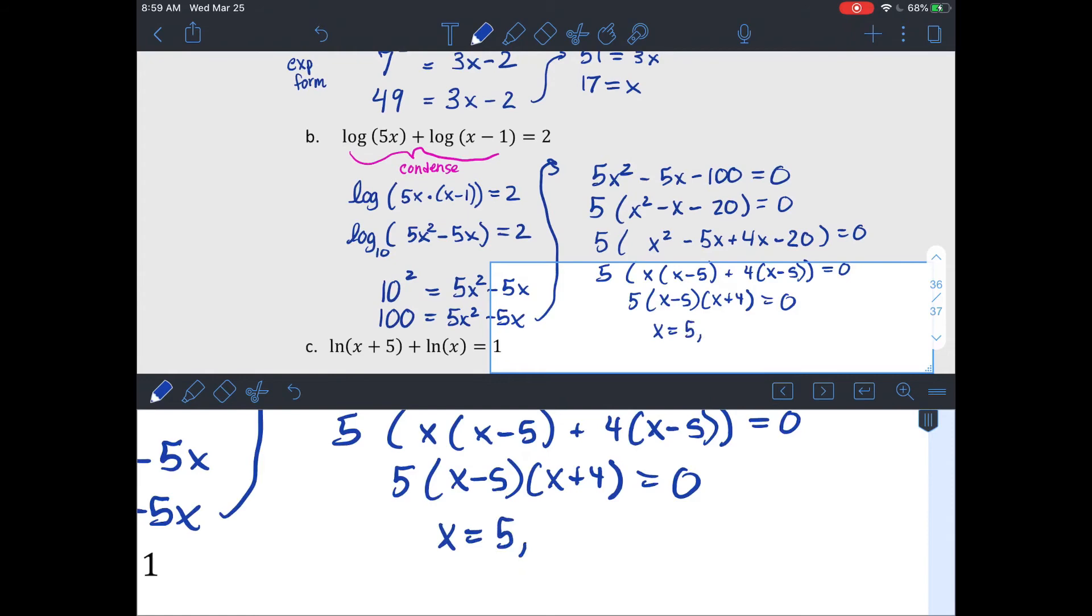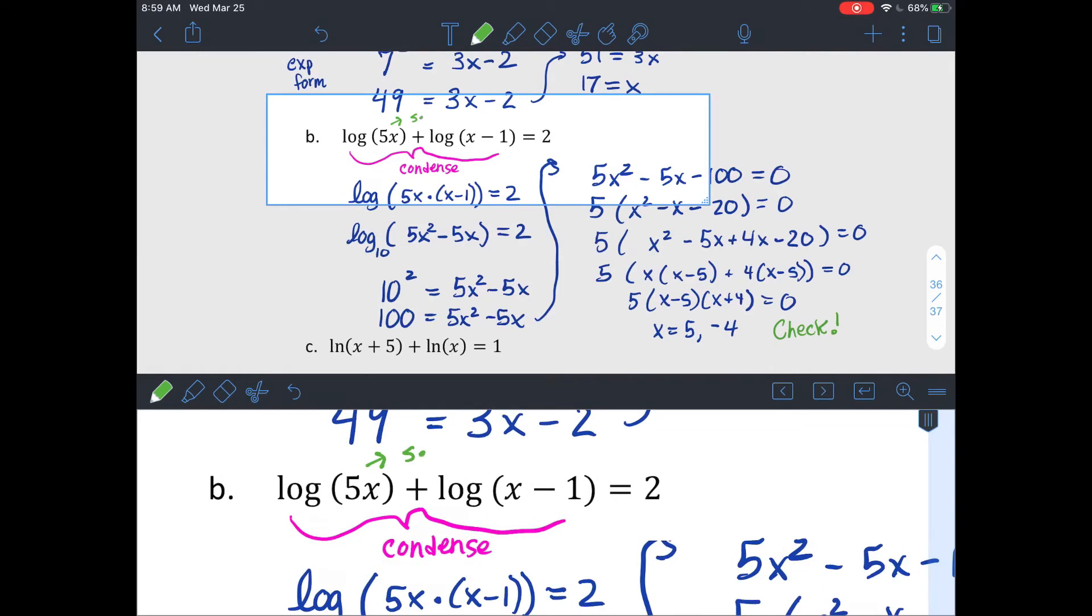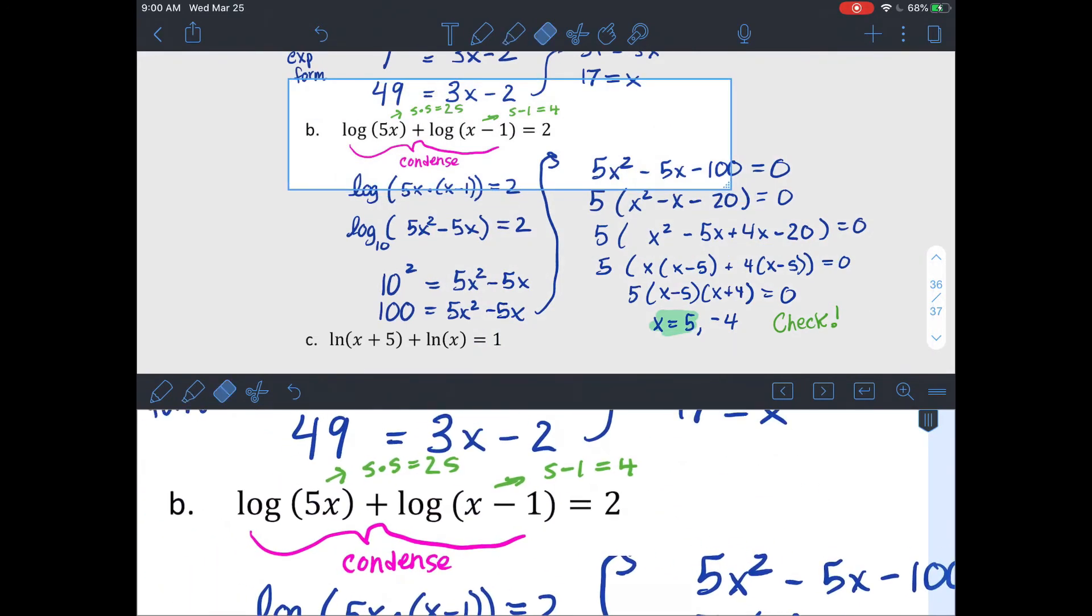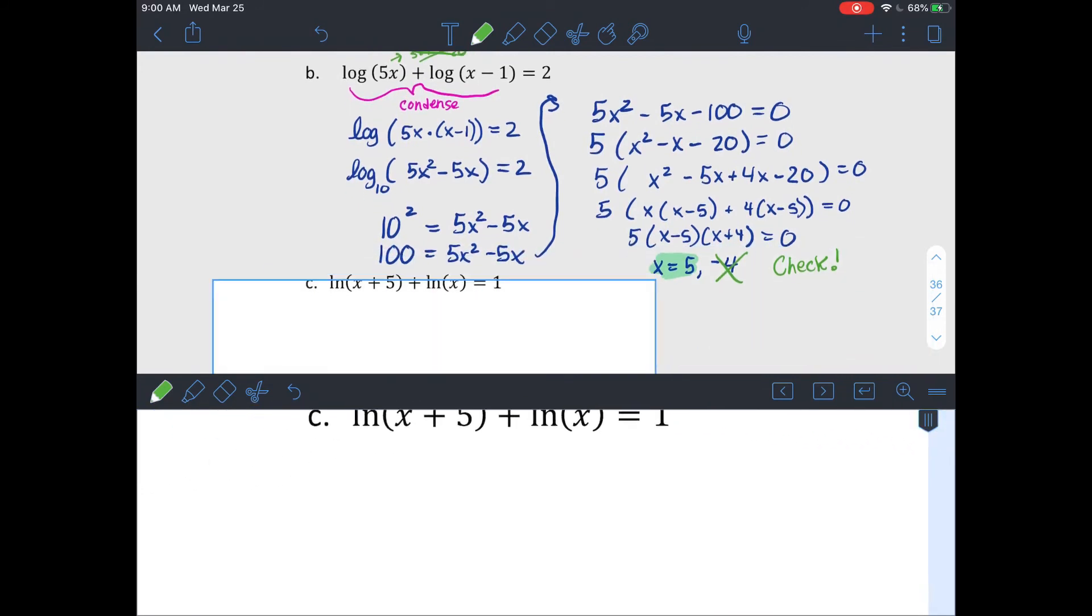So my factored version is going to look like 5 times x minus 5 times x plus 4 equals 0. So potentially x equals 5 and negative 4. Go back to the very original though and check. At least make sure when you plug those back in, the inside of your logarithm is greater than 0. 5 times 5 is 25, it's greater than 0. 5 minus 1 is 4, that's greater than 0. So we could go further, but it looks like x equals 5 is going to work. If I try negative 4 in those, 5 times negative 4 is negative 20. My logarithm is not defined for a negative value, so I don't even really have to plug it into the other one. It doesn't work in log of 5 times x, so negative 4 is not a solution.